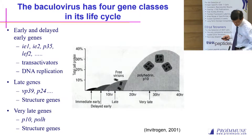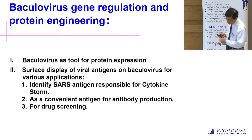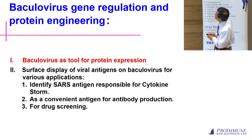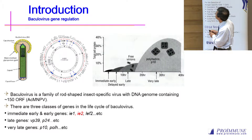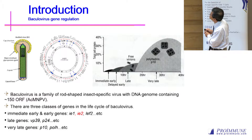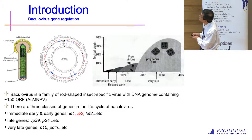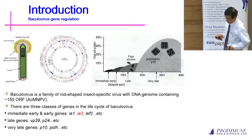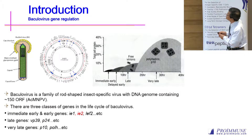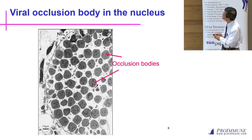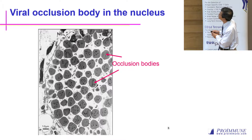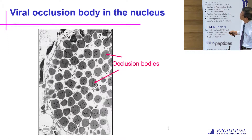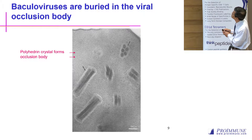I will divide my talk into several small sections. The first one is baculovirus as a tool for protein expression. Baculovirus can generate a lot of protein at very late stages, and we can use their promoter for foreign protein production. Baculovirus also has an envelope protein called GP64 — it's a type 1 membrane protein, which is a trimeric protein. If you examine a cell infected by baculovirus, you will see a lot of occlusion bodies inside the nucleus made out of polyhedrin proteins.